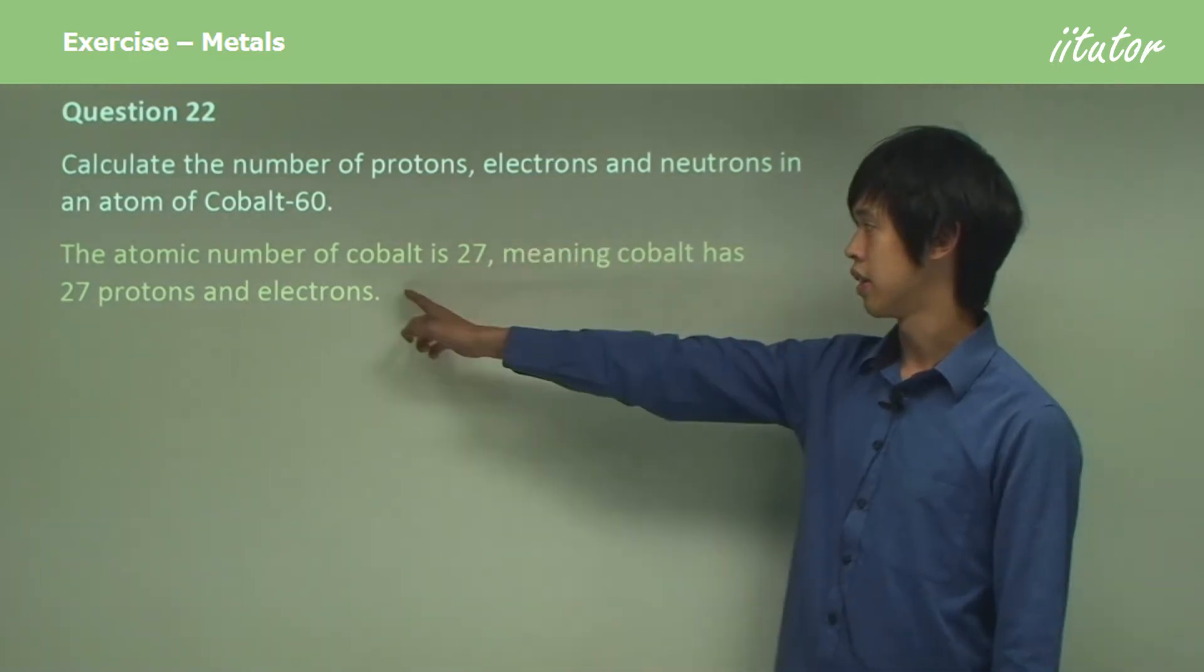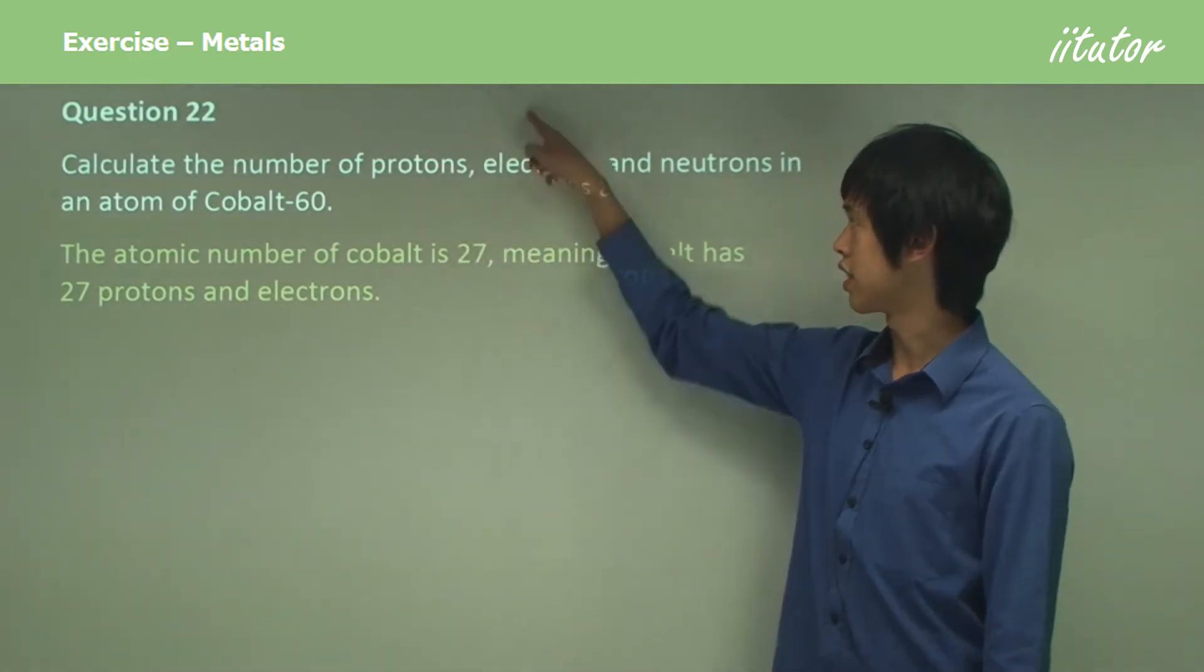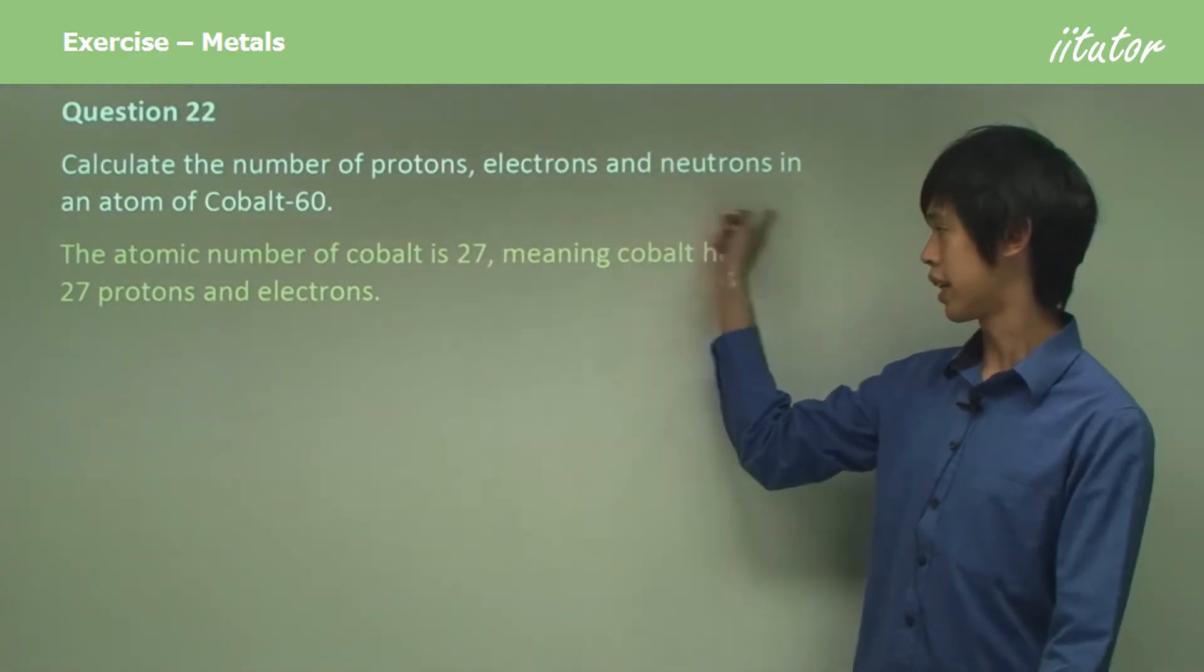So that's the first thing. 27 protons, 27 electrons. We've done this, and this. Now we just need to work out how many neutrons it has.